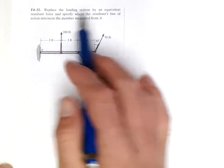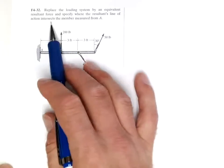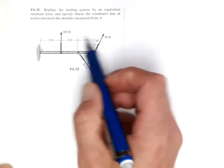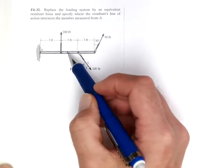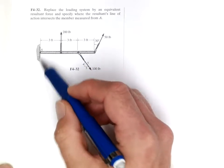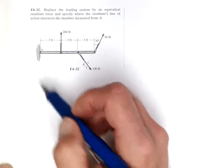Replace the loading system by an equivalent resultant force and specify where its resultant's line of action intersects the members measured from A. So we're going to replace these three forces with one force acting at one point on the beam, which will cause the same reactions here with the vertical, horizontal, and moment.